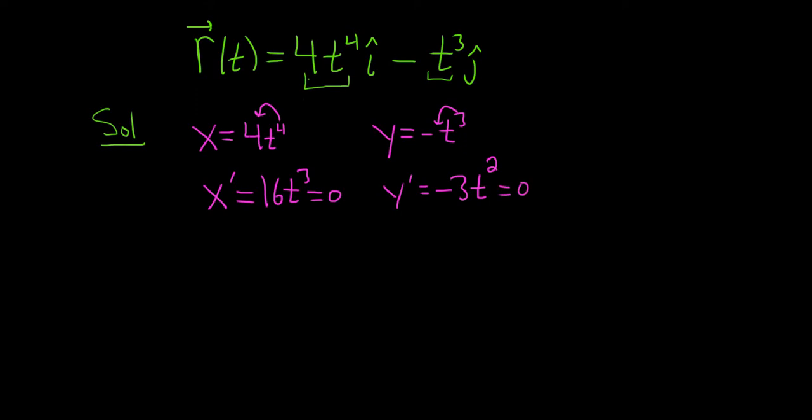So in all of these smooth problems, you basically call this piece here x, call this piece here y, take the derivatives, and set them both equal to zero. And the answer will tell you where it's not smooth.